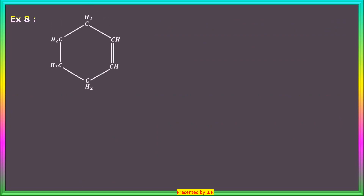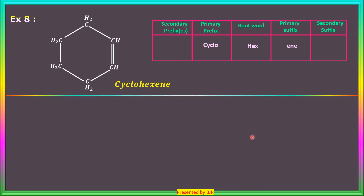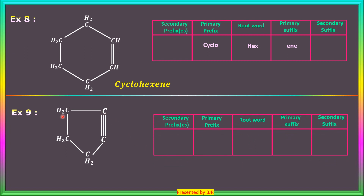Example 8: Six carbon atoms in the ring — root word is 'hex'. There is a double bond between two carbon atoms, so the primary suffix is 'ene'. Primary prefix is 'cyclo'. Name: cyclohexene. Example 9: Five carbon atoms in the ring — root word is 'pent'. There is a triple bond between two carbon atoms, so the primary suffix is 'yne'. Primary prefix is 'cyclo'. Name: cyclopentyne.